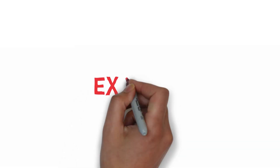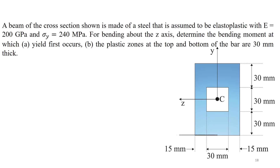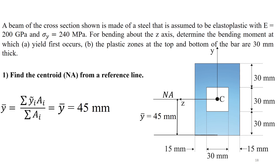Now we are going to look at an example of inelastic bending. A beam of the cross-section shown is made of steel assumed to be elastoplastic with E equals 200 GPa and sigma_y equals 240 MPa. For bending about the z-axis, determine the bending moment at which yield first occurs, and the plastic zones at the top and bottom of the bar which are 30 mm thick. The first step is to find the location of the neutral axis. Because of the symmetry in this example, the centroid is located in the middle of the cross-section, so y-bar equals 45 mm from the bottom.